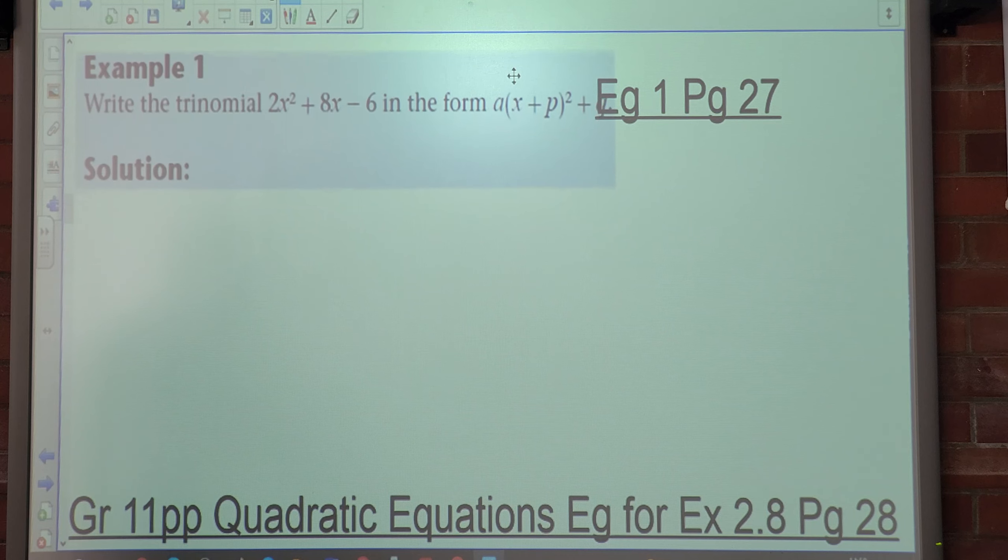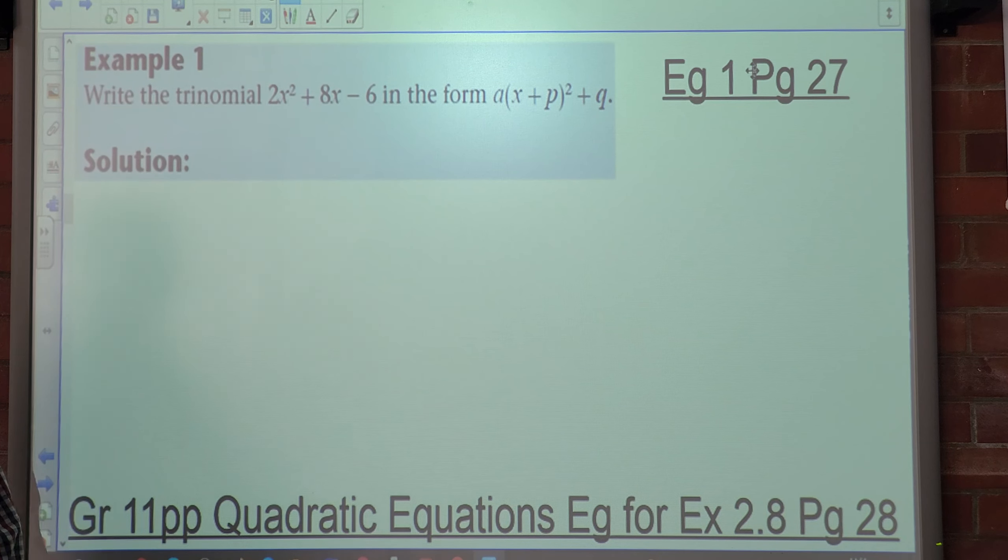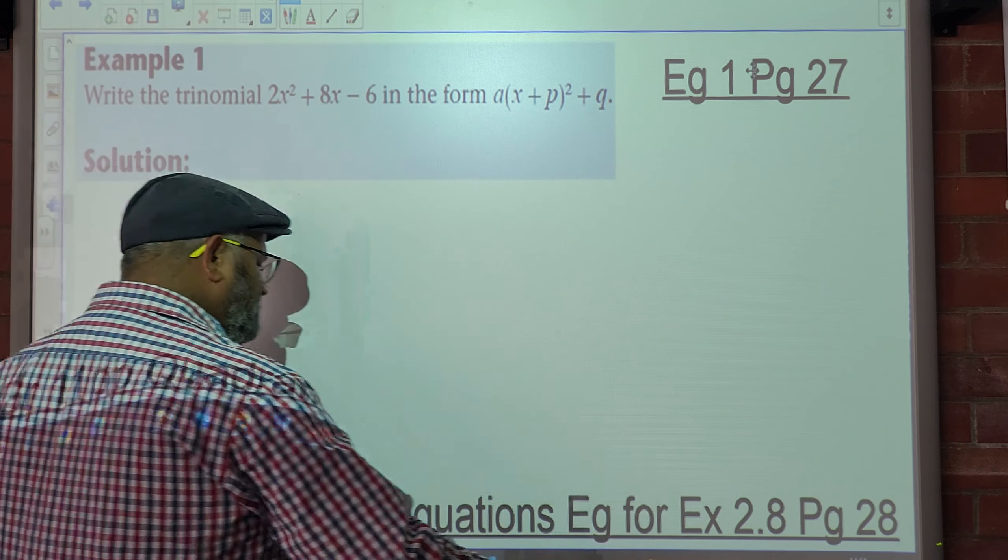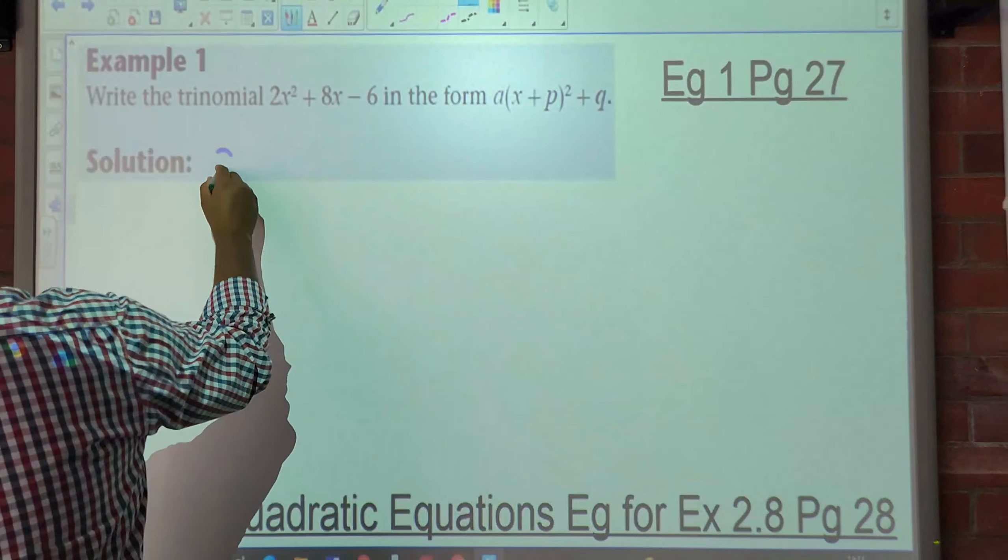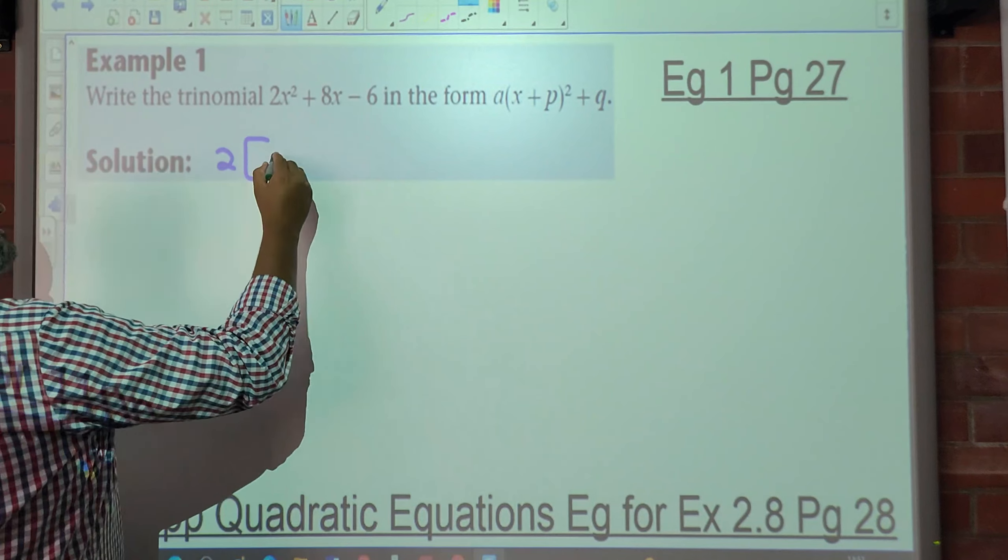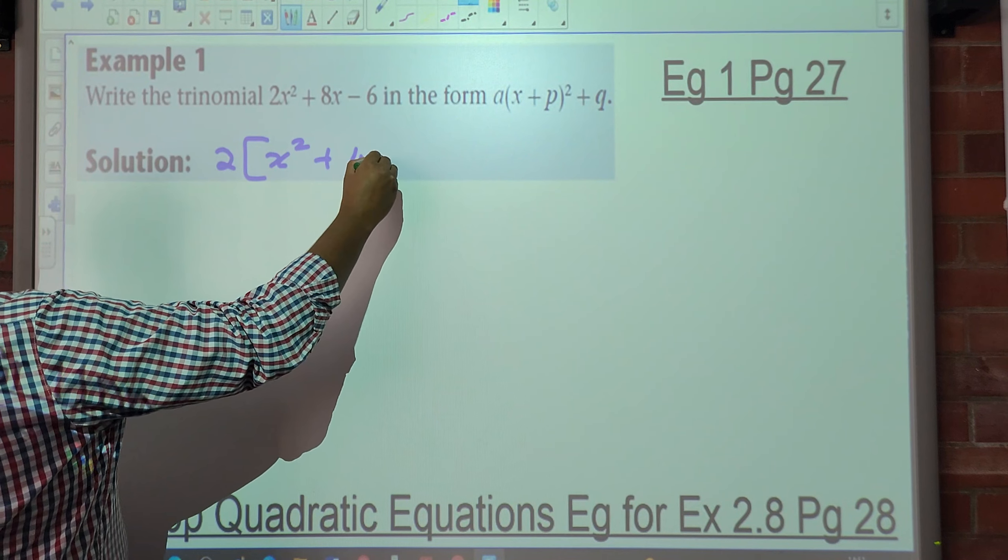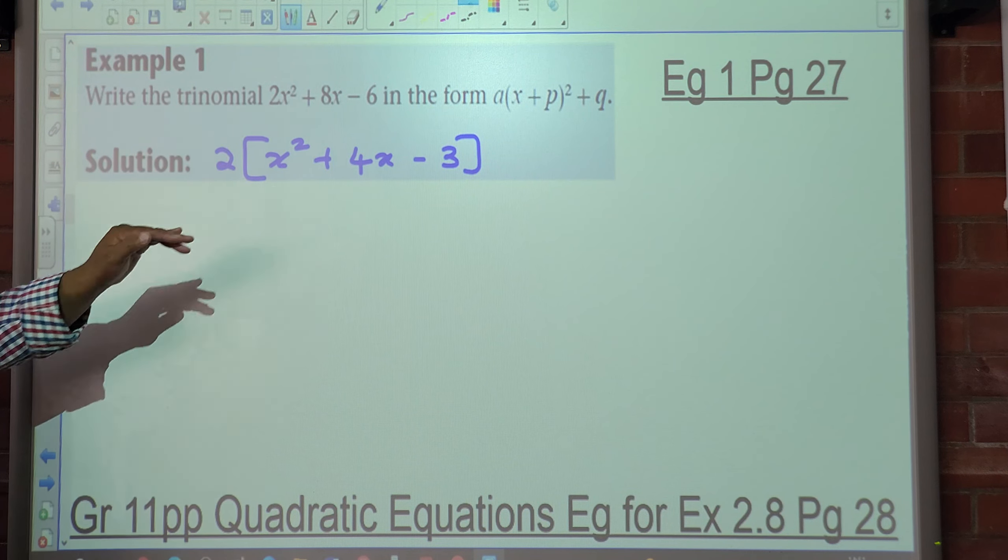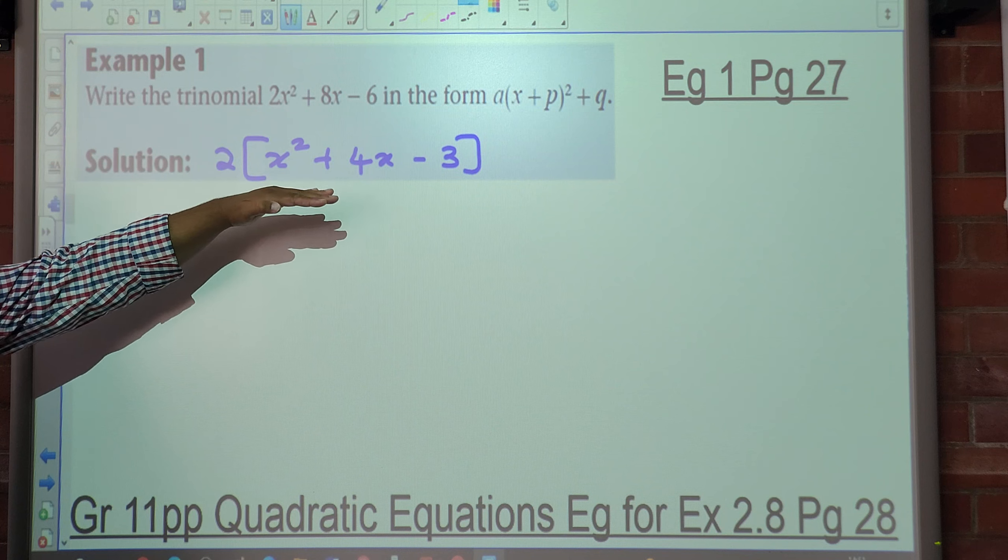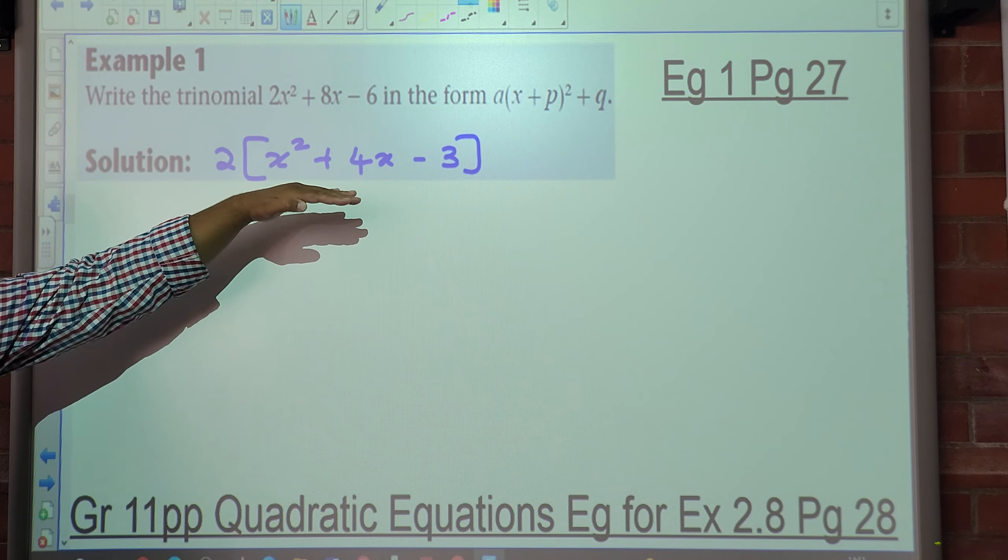So what we do is we get it in the form we are familiar with. We get it with a 1 in front. So in other words, we take out 2 as a common factor. So let's take 2 out. What are we left with? x² + 4x - 3. Now you see inside the bracket, what do you notice? I'm familiar with this.